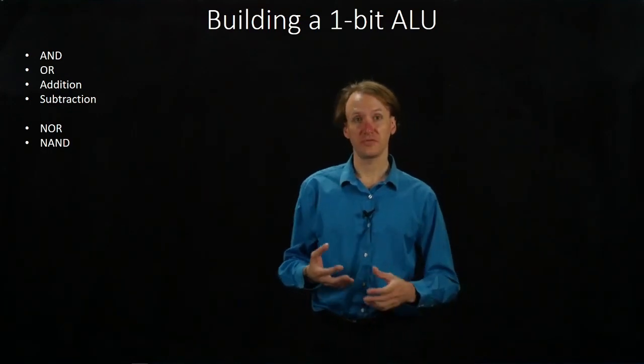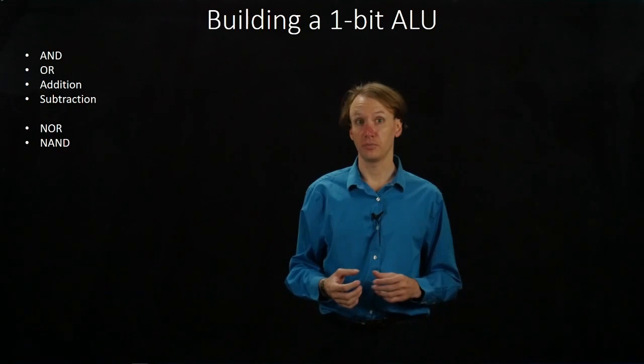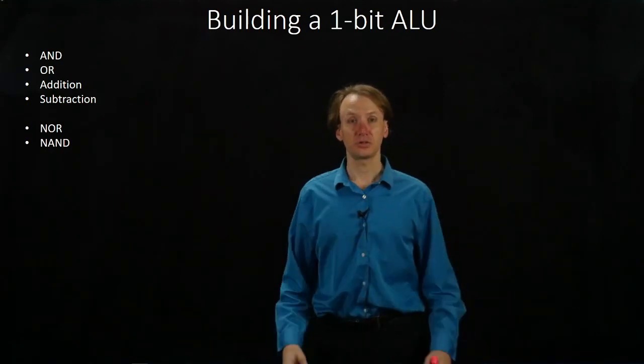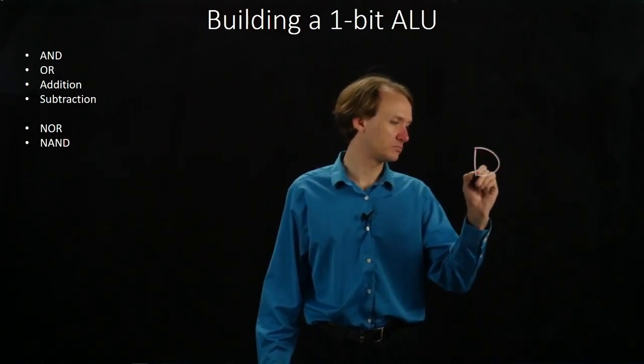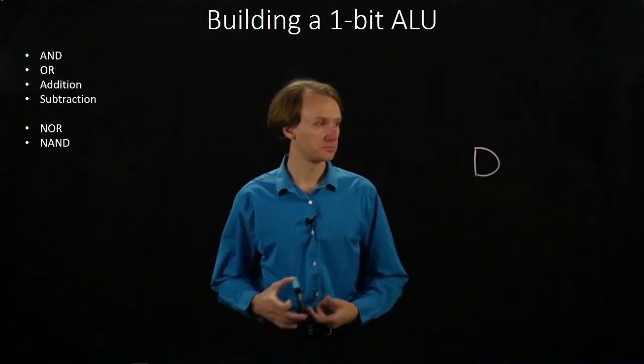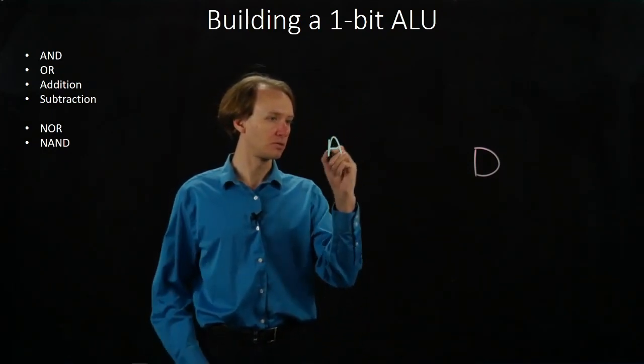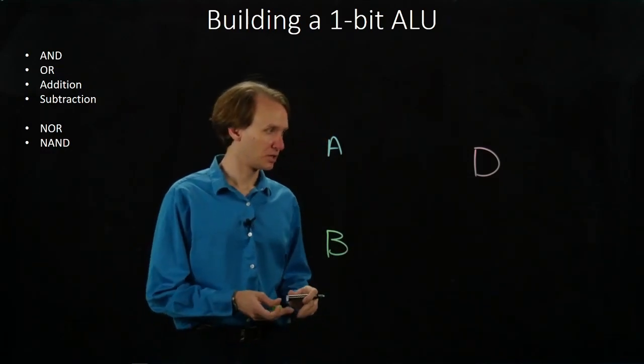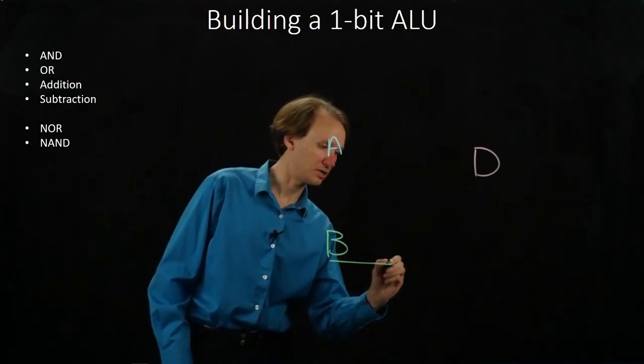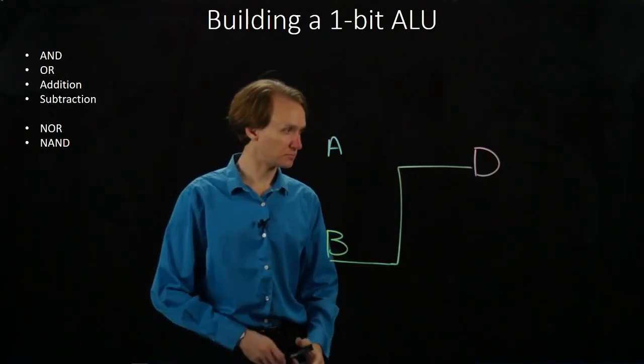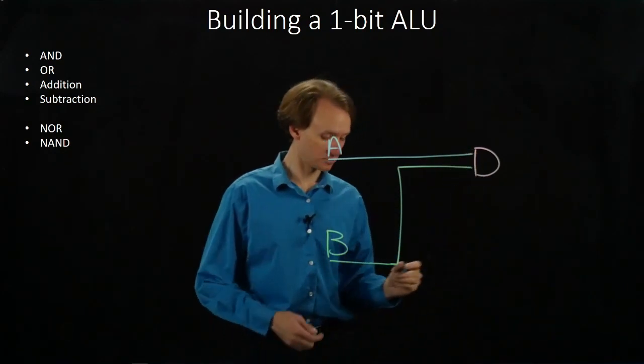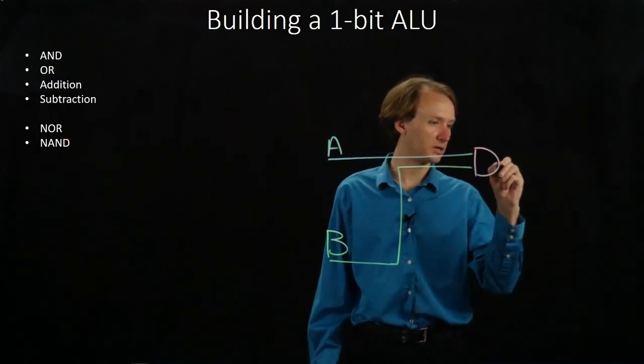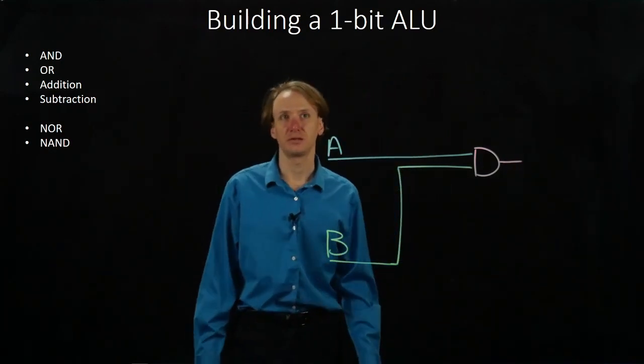So we're going to build this in a few pieces. We'll start by just building a one-bit ALU, just the same way as we have the arithmetic operations. So I'll start with something simple, the AND operation. If I want to know what A and B are, I need an AND gate. I'll put A over here, B over here, and we'll just go ahead and connect these. So there's A and B, and I get my result out. That one's not terribly interesting.